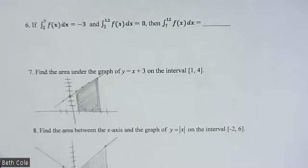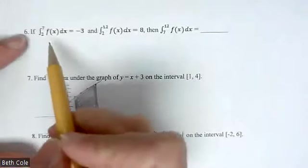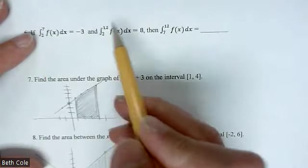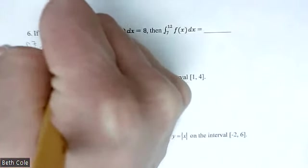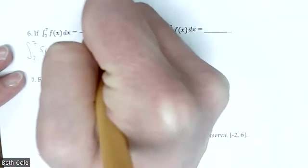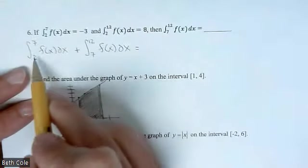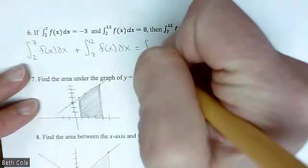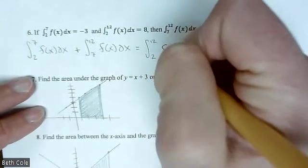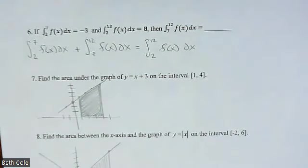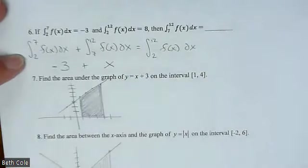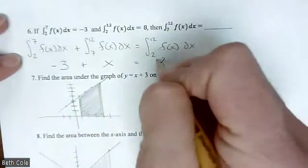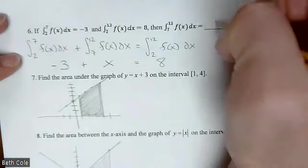All right. So I went and drew those graphs while you guys were working. Number 6, we have integral from 2 to 7, and we have 2 to 12, and we're being asked about 7 to 12. I would write this out. Integral from 2 to 7 f(x)dx plus integral from 7 to 12 f(x)dx. From 2 to 7 plus 7 to 12 would give you from 2 to 12. If you can do this without writing that out, that's fine. A right answer is a right answer. But this is the property where that's coming from. From 2 to 7, we were given that's negative 3. From 7 to 12 is what we're looking for. So I'm going to just call that x. And from 2 to 12 was 8. So negative 3 plus what gives you 8? 11 is your answer.